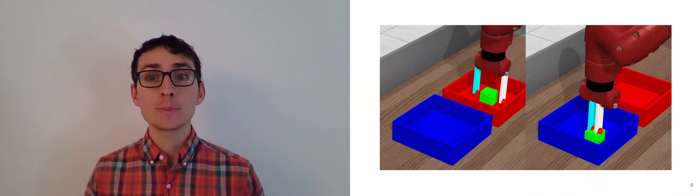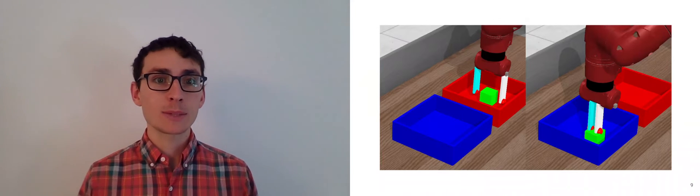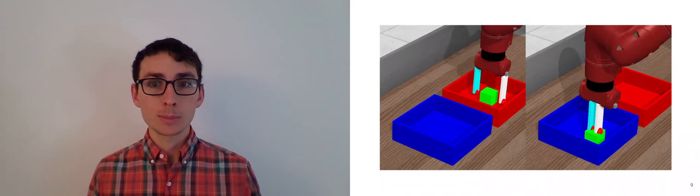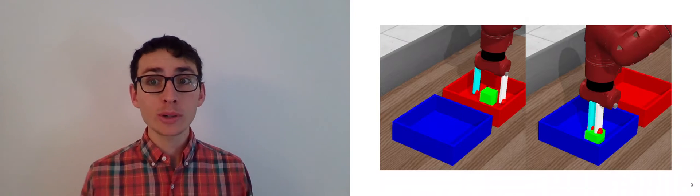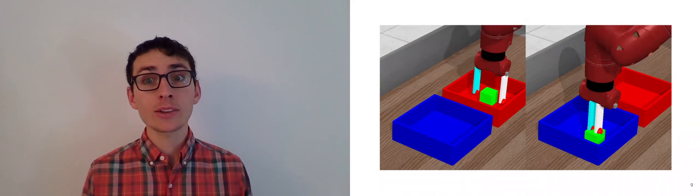We evaluated on many tasks, including this bin picking task. The agent has to pick up the block and move it towards the blue bin. It's really hard because we don't have reward shaping, we don't have demonstrations, and it's done entirely from images.